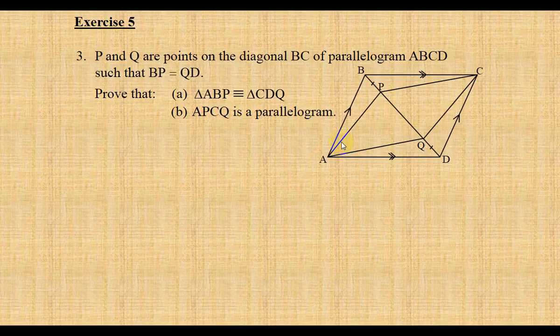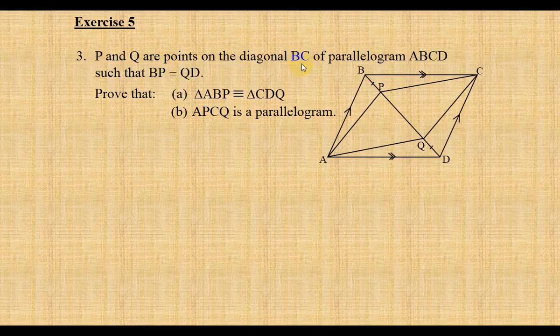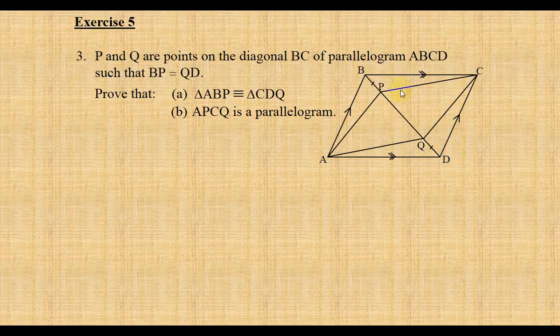Let us look at this rider and I hope you enjoyed the ride. The question states that P and Q are points on the diagonal BC of parallelogram ABCD such that BP is equal to QD.